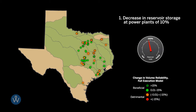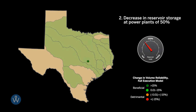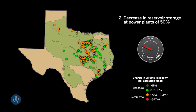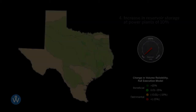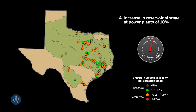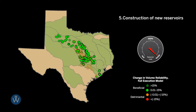These maps indicate changes in volume reliability under the full execution model. Our models show that in general, decreasing water storage at power plants is beneficial to other water users. On the other hand, increasing power plant storage can be detrimental to other users, possibly indicating over-allocation of water resources. Similar results were observed under the current conditions model; however, the magnitudes of changes are less pronounced.